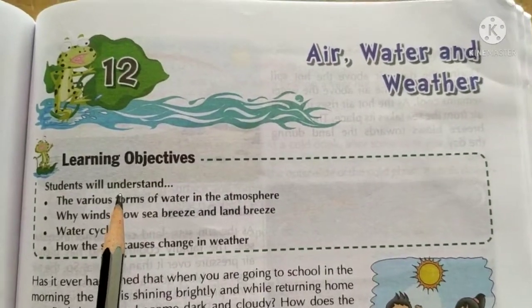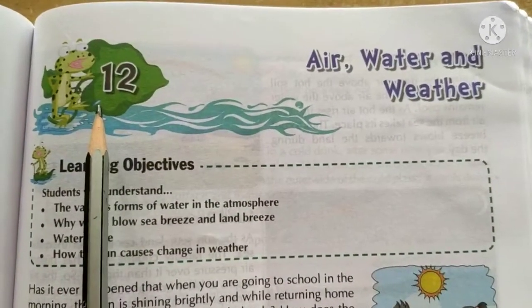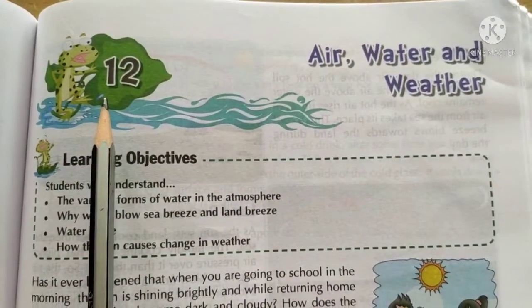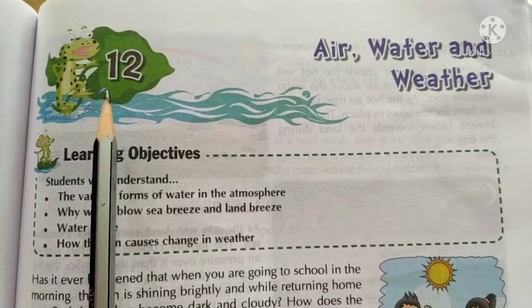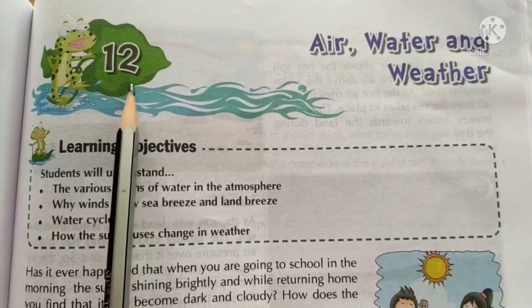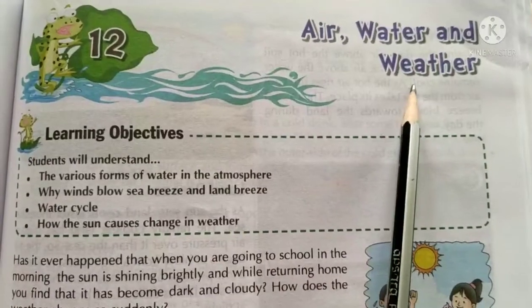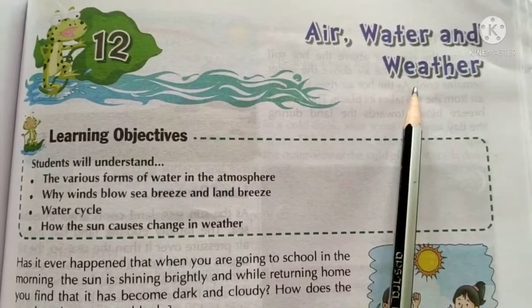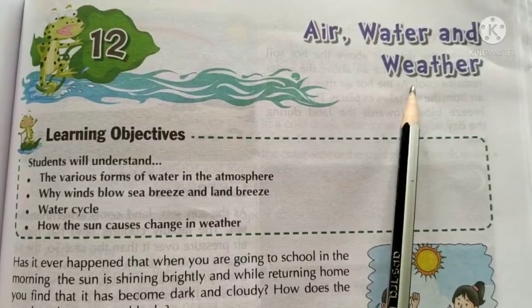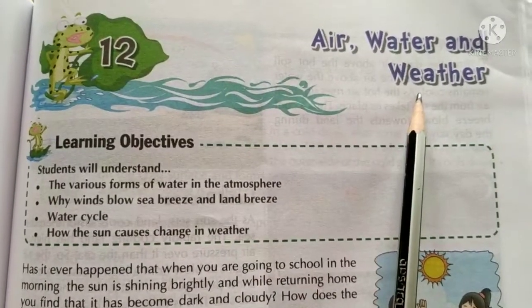Dear students, now that we have finished the chapter reading — keywords and things to remember — explanation of Chapter 12: Air, Water and Weather, let us move on to the textbook exercises from the chapter.